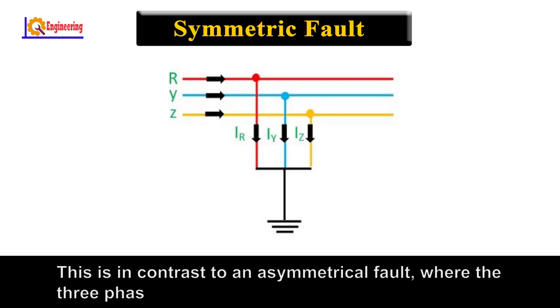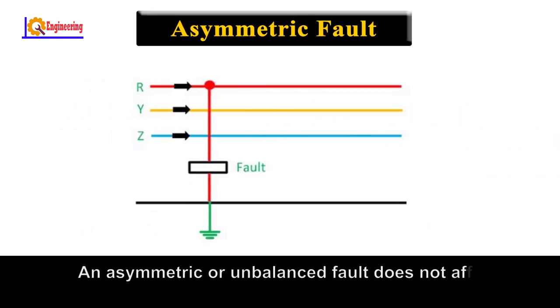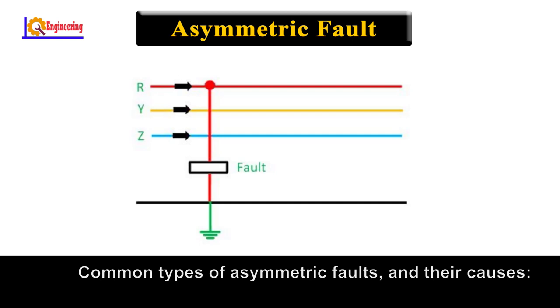This is in contrast to an asymmetrical fault, where the three phases are not affected equally. Asymmetric fault: An asymmetric or unbalanced fault does not affect each of the three phases equally. Common types of asymmetric faults and their causes: